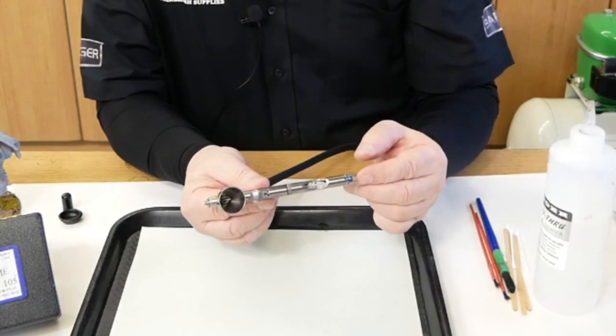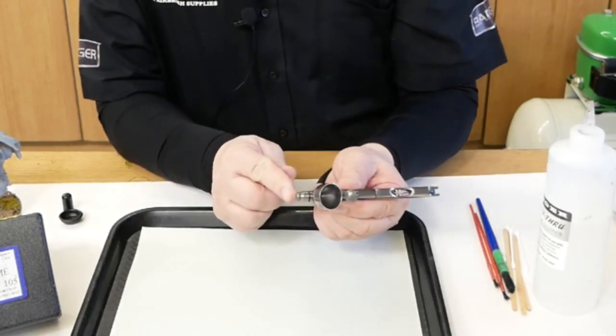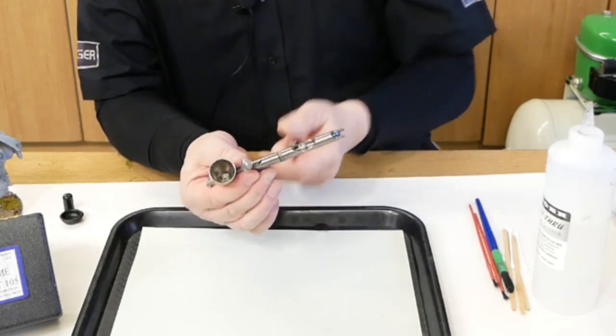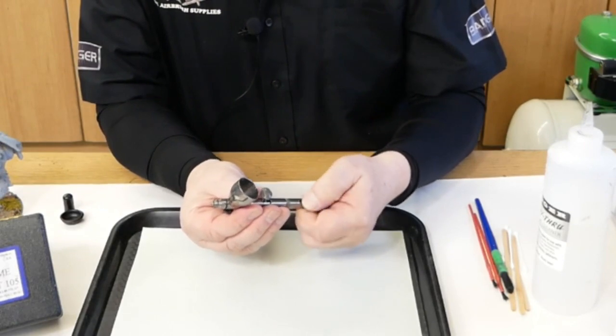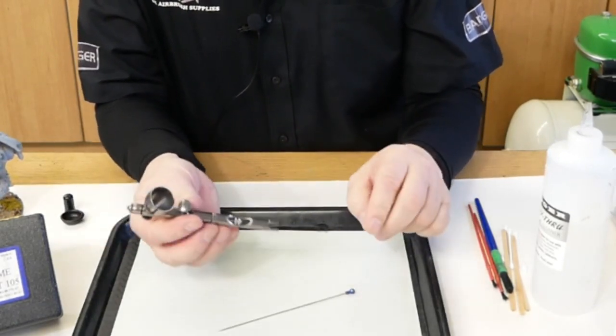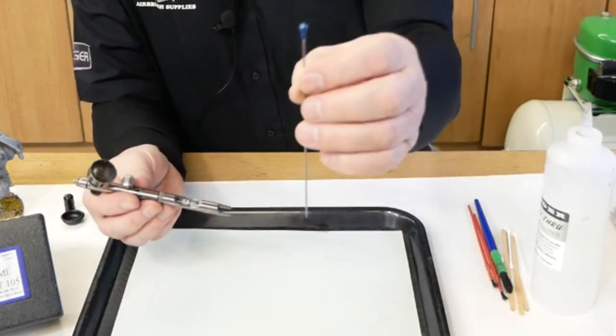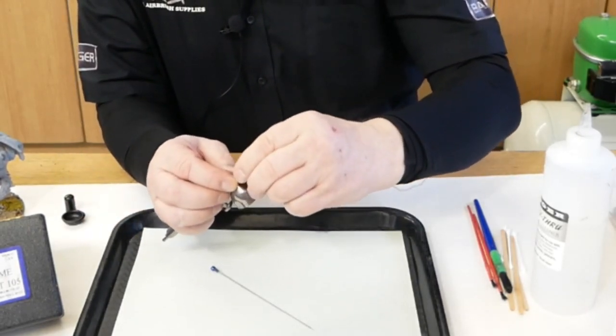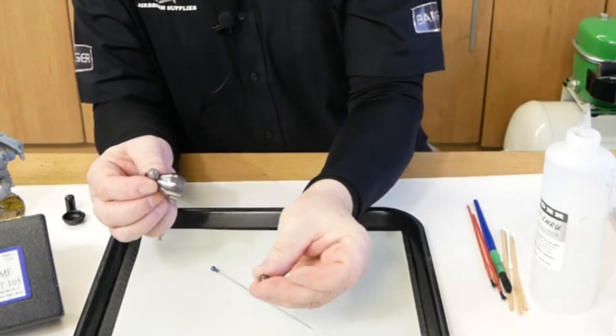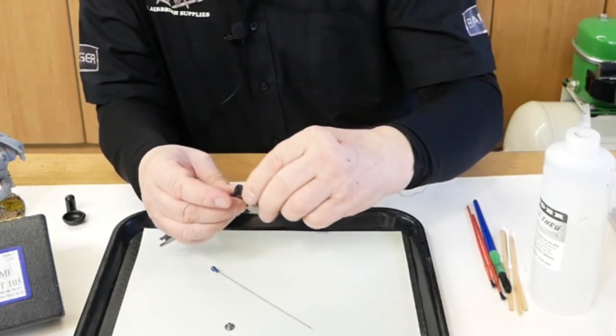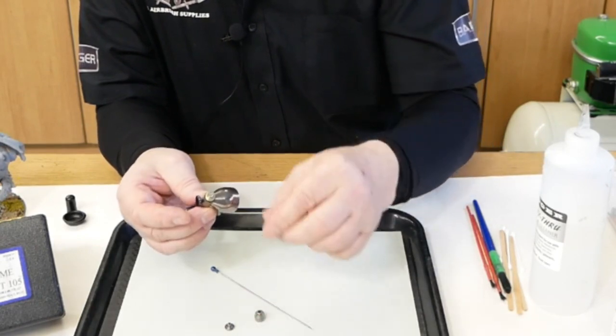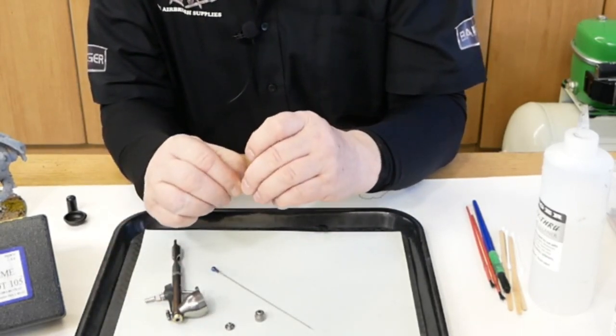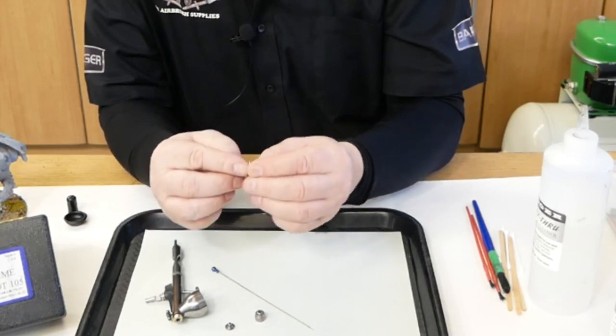This is the blue needle which is the 0.5. The spray regulator is for the 0.3. So we'll just take it apart and see what the tip is. So as I say we've got the blue needle which is the 0.5, the spray regulator is for the 0.3, and the tip is the 0.3.